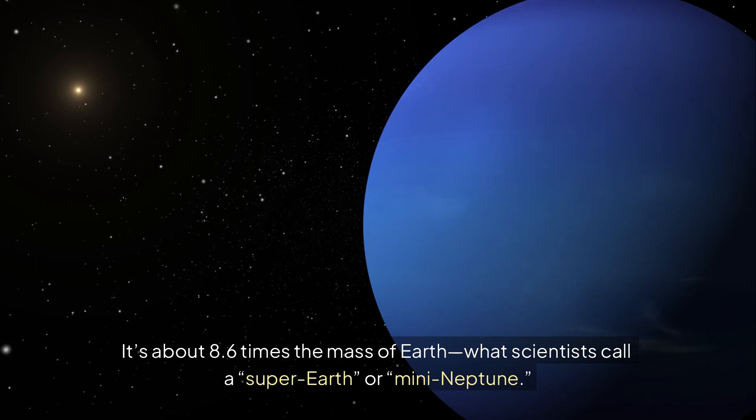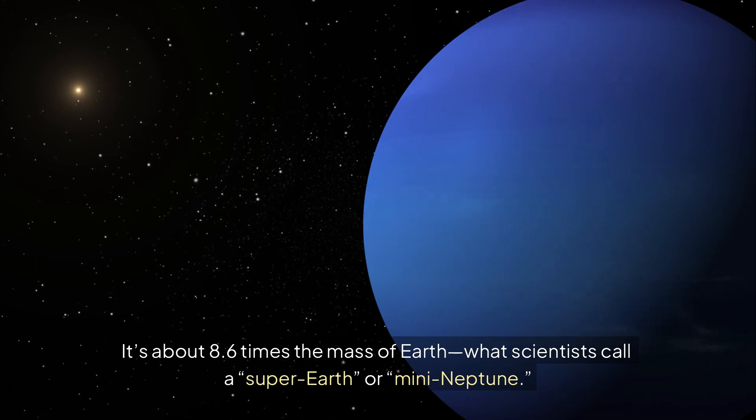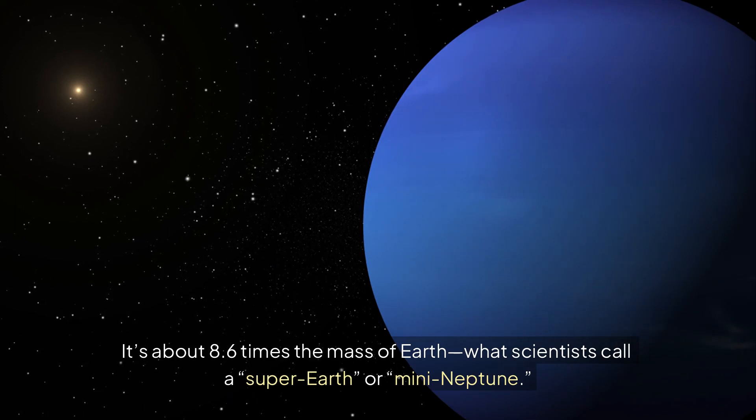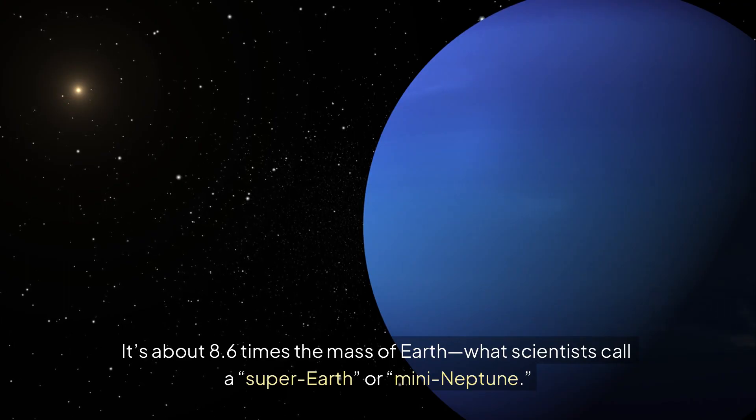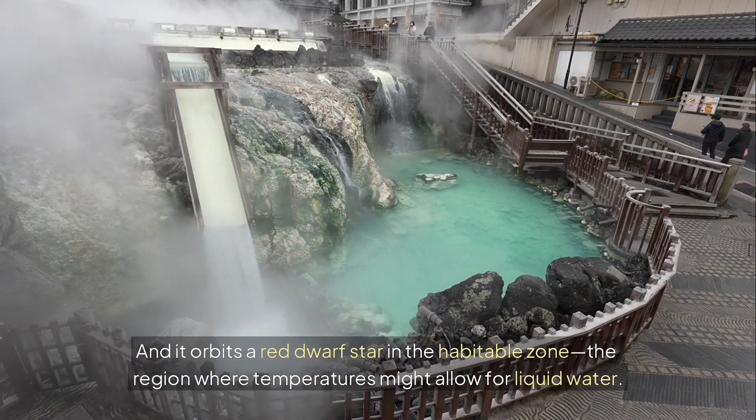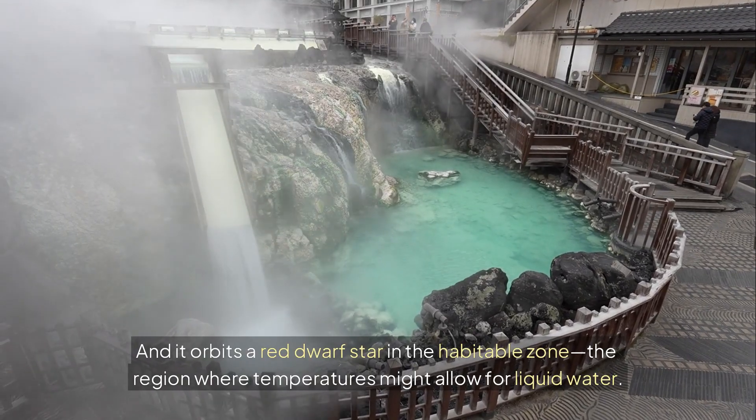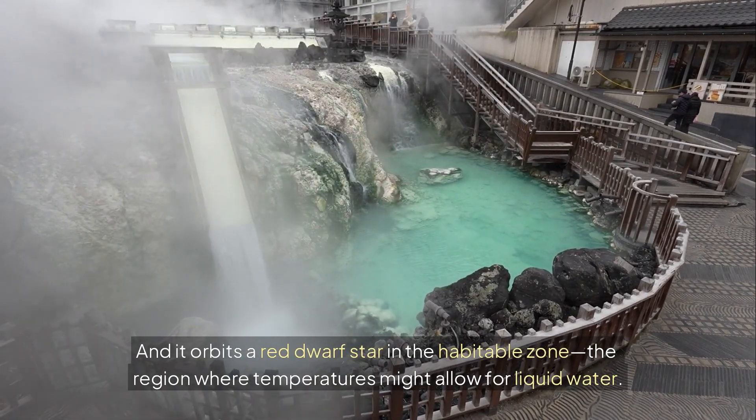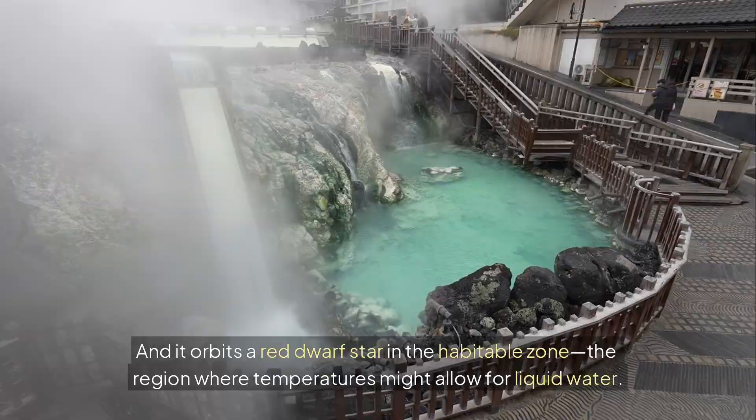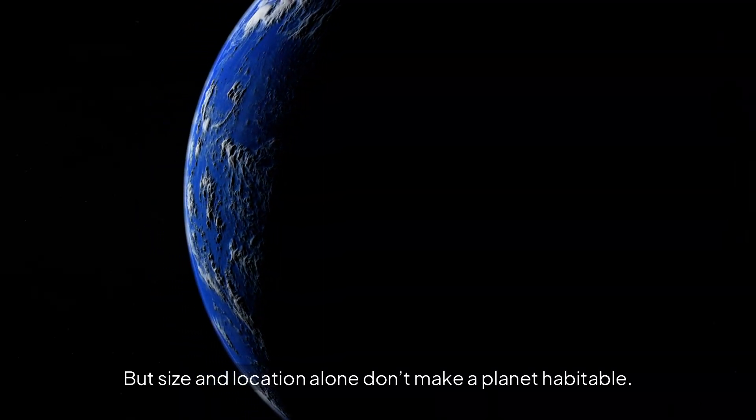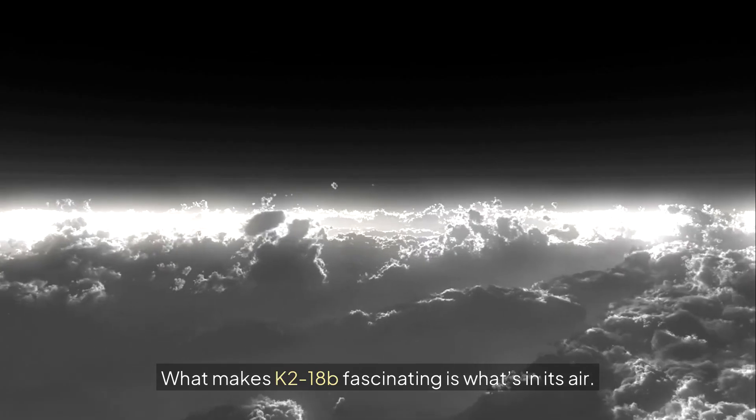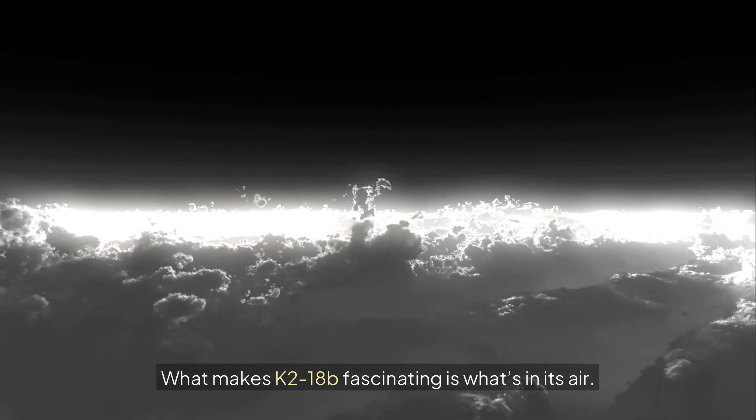And K-218b might be the first real example we've found. It's about 8.6 times the mass of Earth, what scientists call a super-Earth, or mini-Neptune. And it orbits a red dwarf star in the habitable zone, the region where temperatures might allow for liquid water.